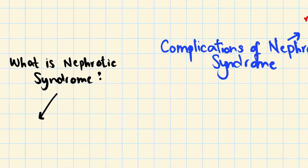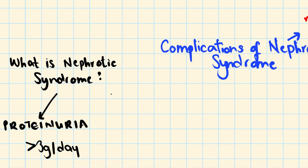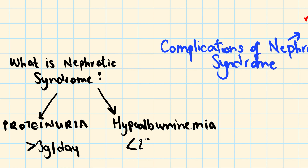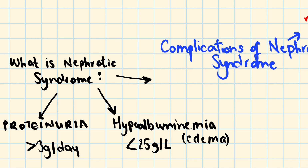Quick recap: what is nephrotic syndrome? Remember the root 'nephro' in nephrotic should remind you of 'pro' in proteinuria. There will be proteinuria of more than three grams per day. Because of the proteinuria you lose albumin in the urine, leading to hypoalbuminemia — less than 25 grams per liter. Without albumin, which maintains oncotic pressure, fluid leaks out into the interstitium causing edema.